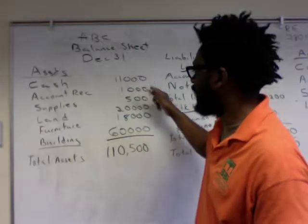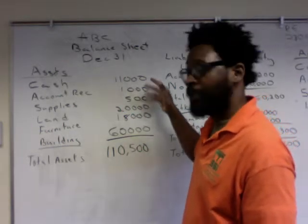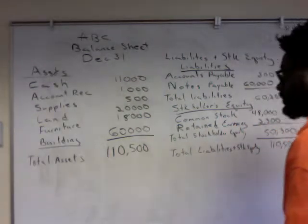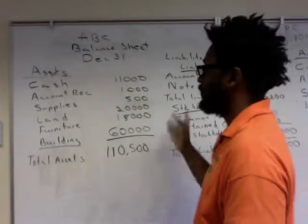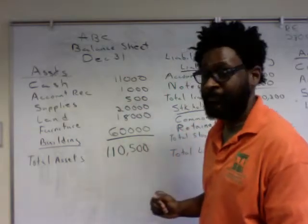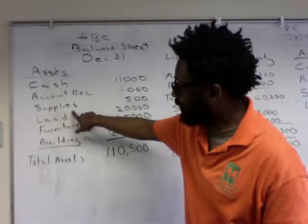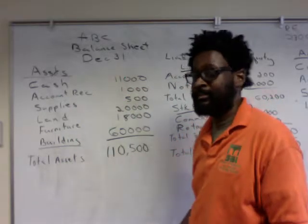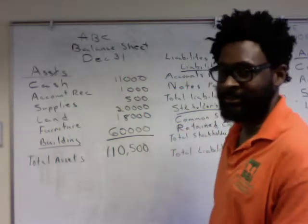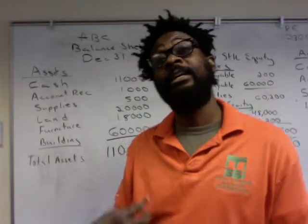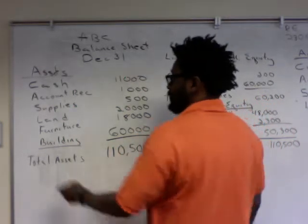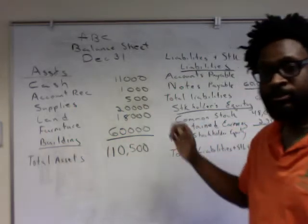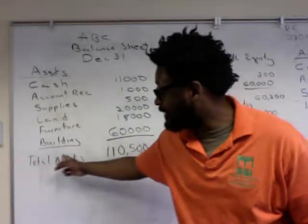The numbers I've added into this financial statement come directly from the trial balance — all we do is transfer that information in. After reporting supplies of $500, we move on to long-term assets. The list of long-term assets — those that convert into cash in longer than a year — consists of land, furniture, and building. We apply those numbers and then calculate the total.